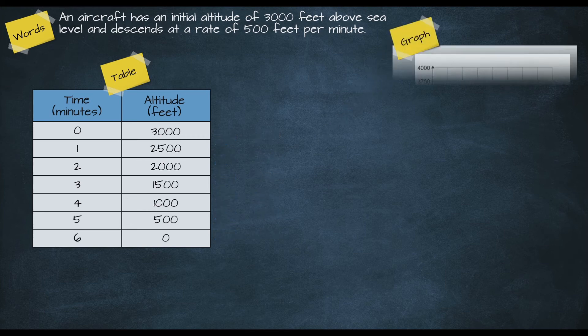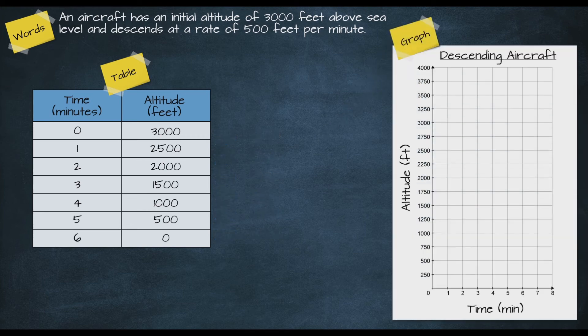Moving on to our graphical representation, we plot our initial altitude of 3000 feet on the vertical axis. Since the aircraft is now descending, when we move over one minute on the graph we move down 500 feet — corresponding to two squares down on this graph. We continue this pattern and draw a straight line to complete the graph.